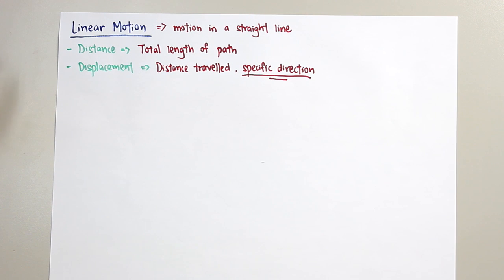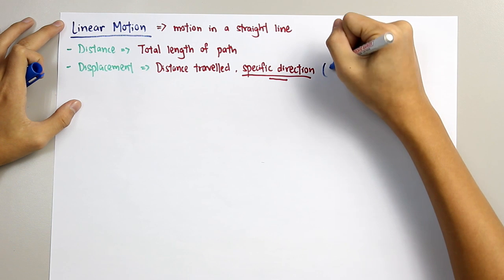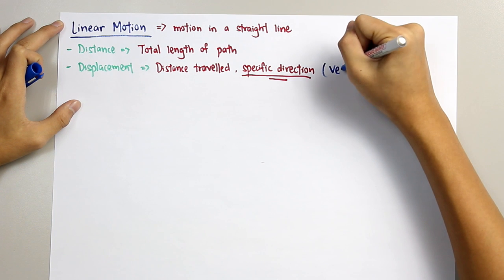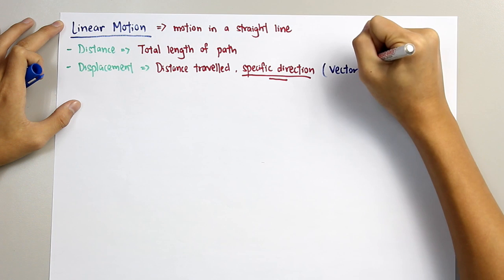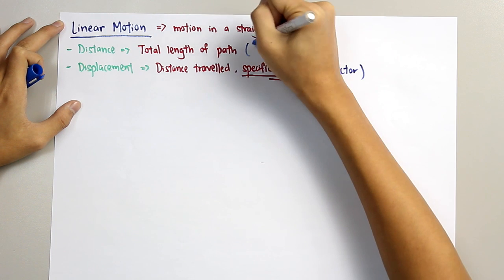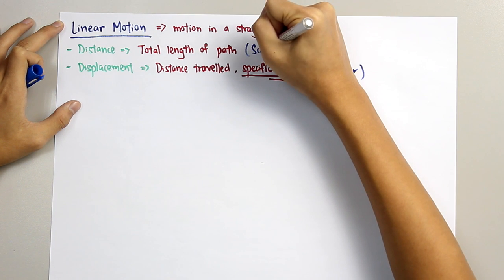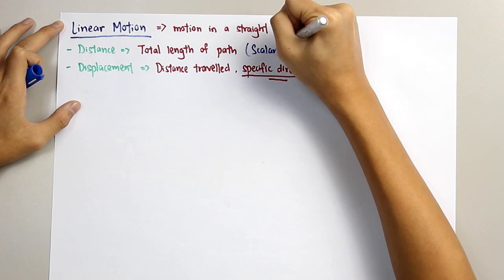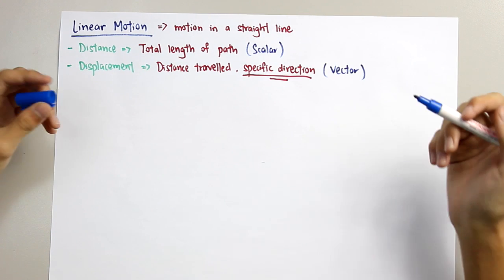We know that scalar is a quantity that only has magnitude, whereas vector is a quantity that has magnitude and direction. So, displacement is a vector quantity, whereas distance is a scalar since the direction is not important.